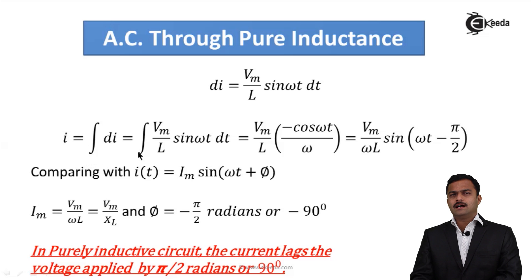After integral, I will get integral Vm/L sin ωt dt. Vm/L is a constant, I take it out. If I integrate sin ωt, I will get minus cos ωt upon ω, that equals Vm/ωL. What I have done here, minus cos ωt, I consider as sin(ωt - π/2) because we know minus cos θ can be represented as sin(θ - π/2).